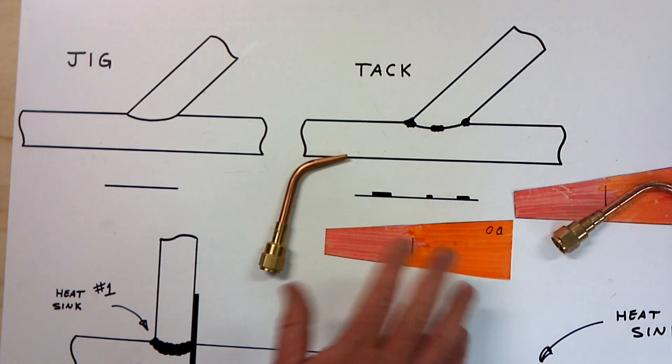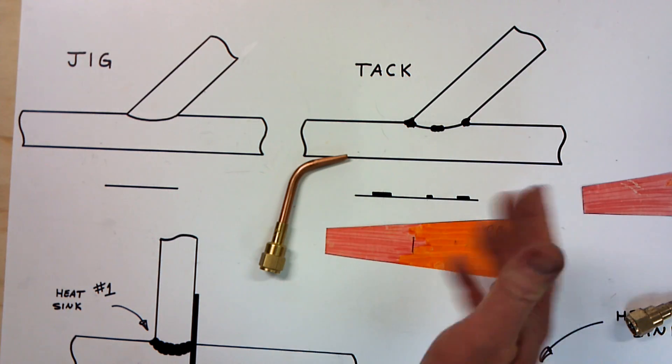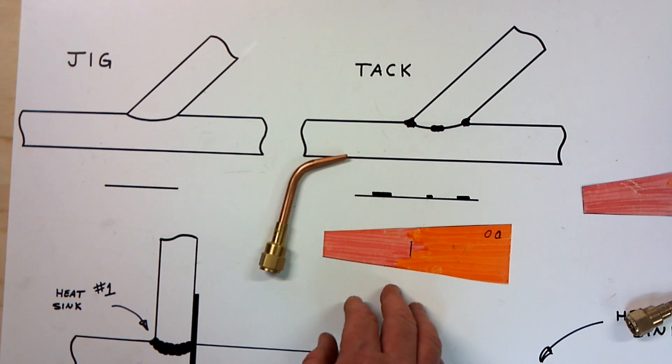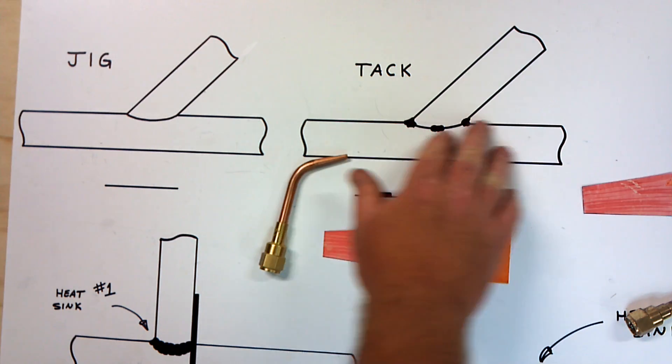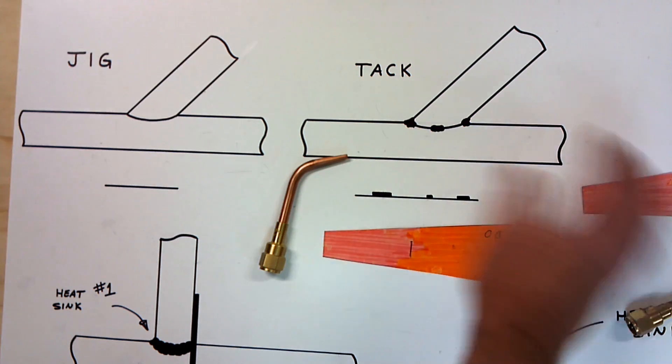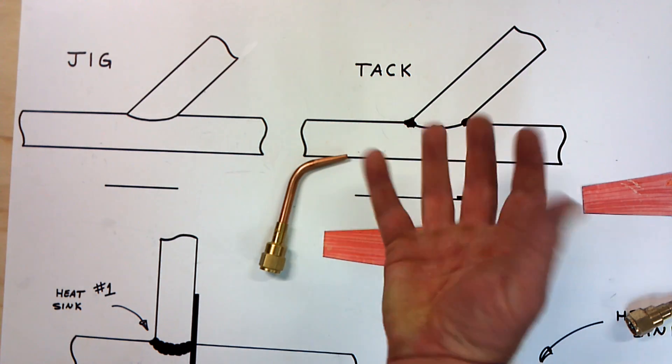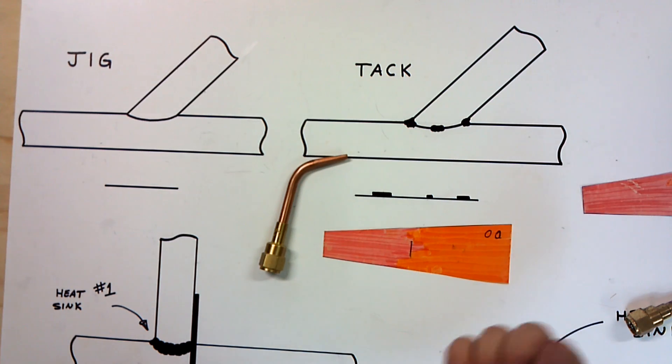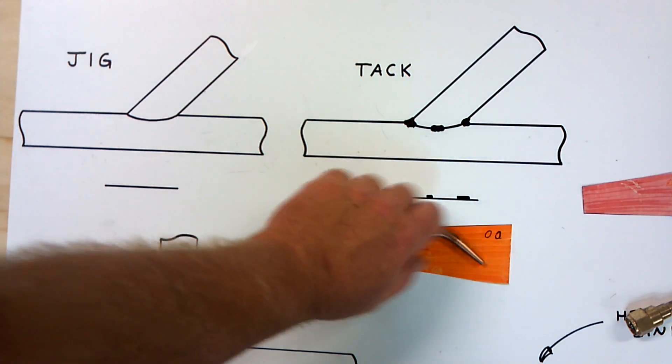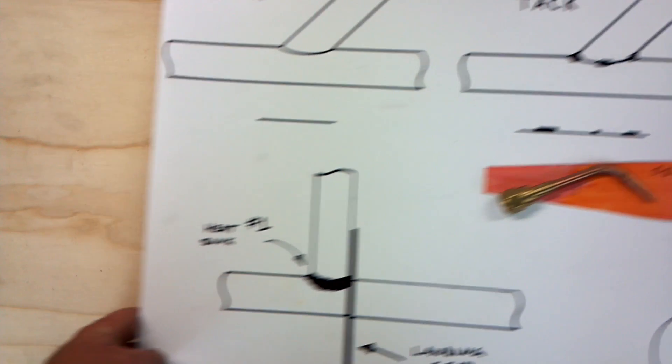So again, I don't want to make this sound complicated because it really isn't, but you want to think these things through. You want to understand that things when you weld become heat sinks. You start adding tack welds and that thickness wants to pull that heat, it wants to grab it and pull it. That changes the whole dynamics of welding. Not a big deal, but still something you need to consider.